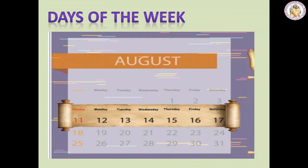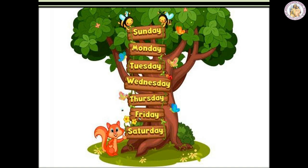First, we are going to learn about the days of the week. Children, look at the picture. You can see the calendar of the month August. The highlighted portions are called the days of the week. Let's see about the days of the week. There are 7 days in a week.